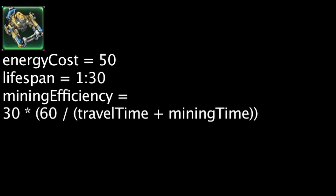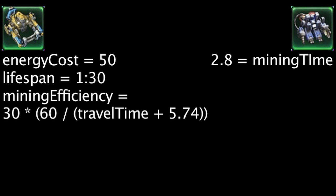It will gather 30 minerals per trip regardless if it's mining from a blue patch or gold patch. A mule mines for 5.74 seconds, while an SCV mines for 2.8 seconds, meaning the mule mines 2.05 times longer.